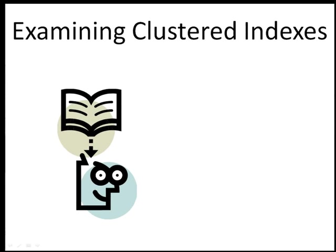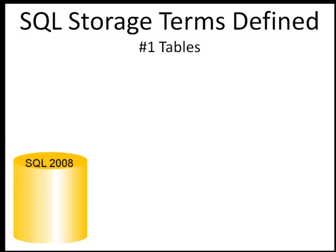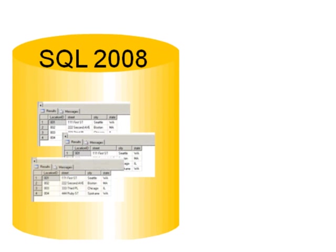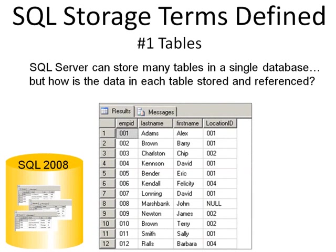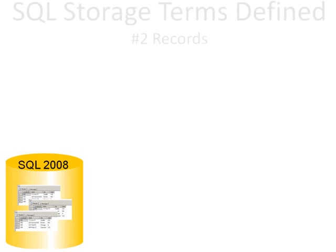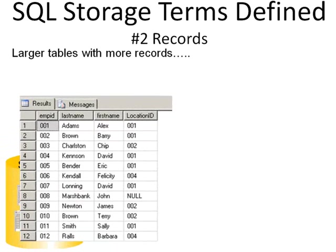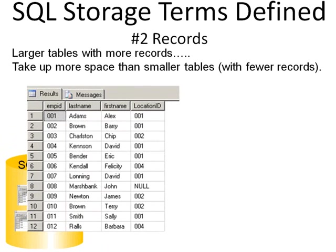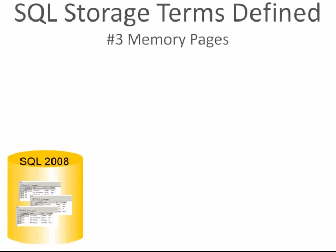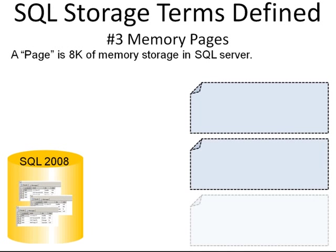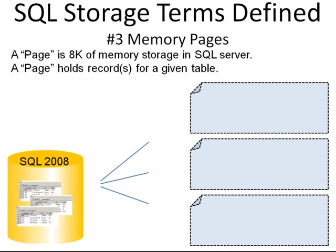Our introduction to indexes is going to start with the clustered index. Before we talk about clustered indexes, we need to understand how records within a table are stored. SQL Server stores many tables in a database, but how is the data in each table stored and referenced? Larger tables with more records will consume more space than smaller tables with fewer records. They're broken up into memory pages — a page is 8K of memory storage in SQL Server.